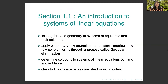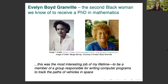In this video, we're going to talk about Section 1.1 material, which is an introduction to systems of linear equations. You will link algebra and geometry of systems of equations and their solutions, apply elementary row operations to transform matrices into row echelon forms through a process called Gaussian elimination, determine solutions to systems of linear equations by hand and in Maple, and classify linear systems as consistent or inconsistent.